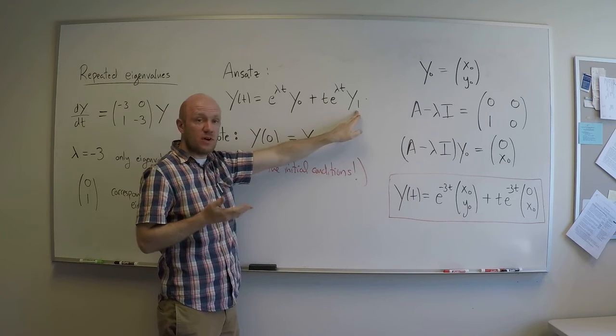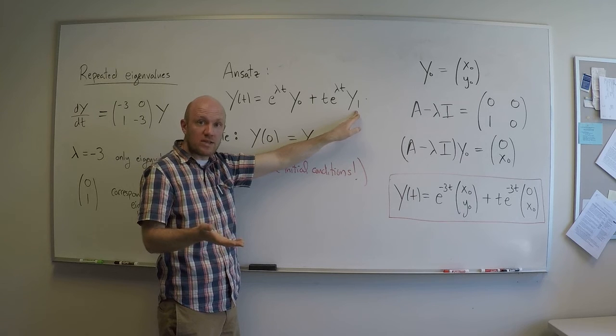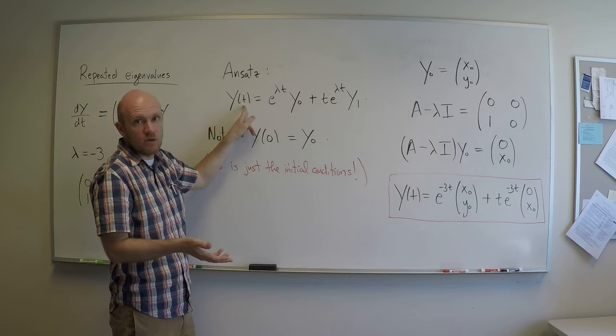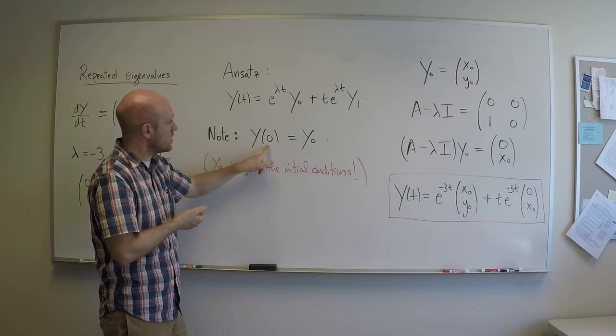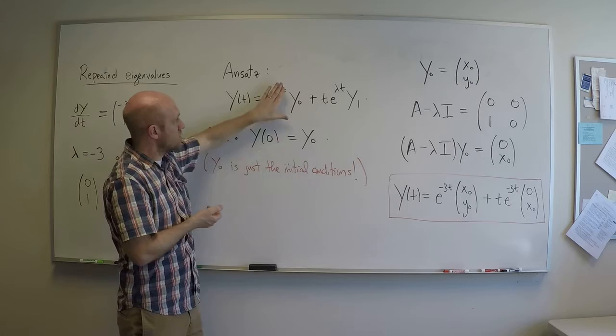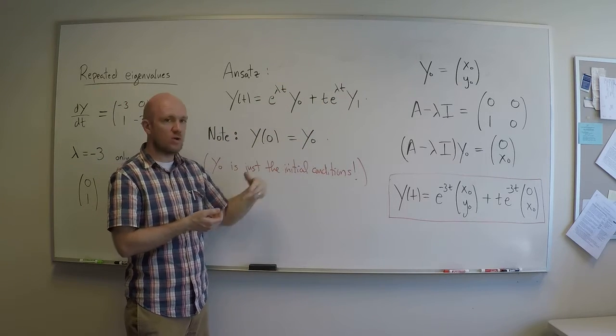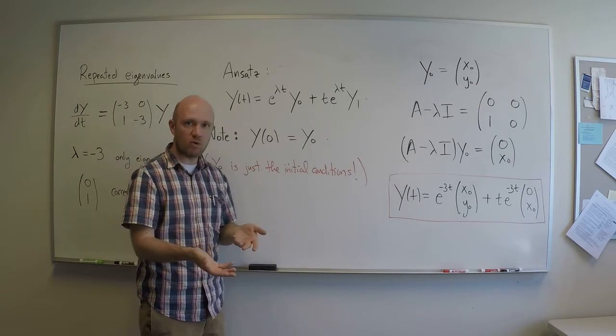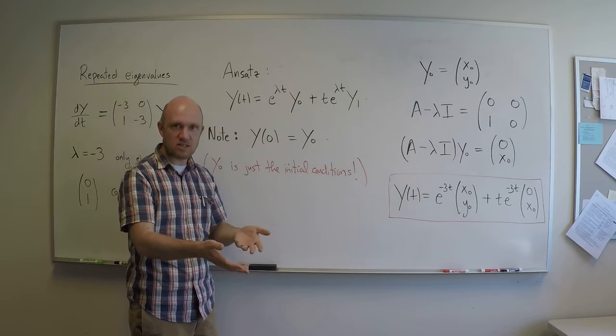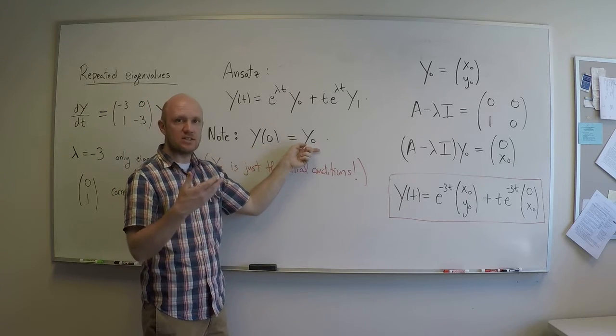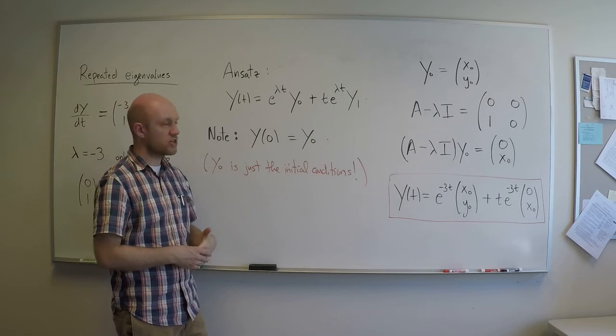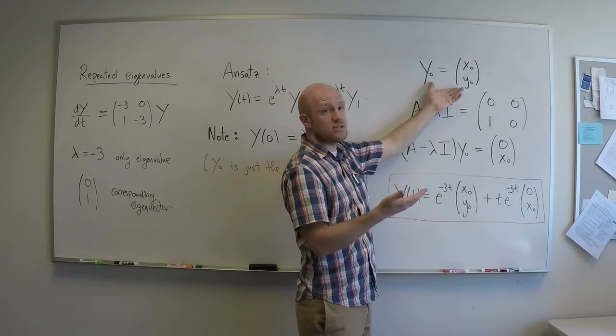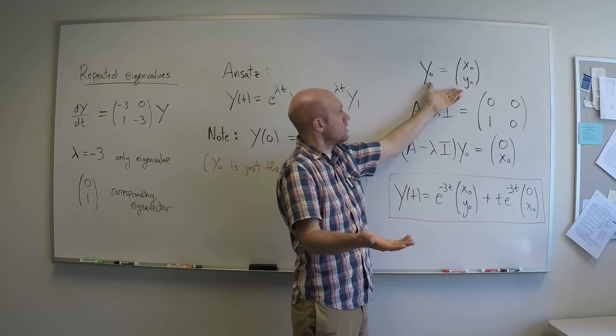Now, we figured out how to find y1 once we know what y0 is, and so the question really is what is y0? Well, if I plug in 0 into the ansatz for t, I get y(0) = y0. This is 1, this is 0. So y(0) is the initial condition. It could be chosen arbitrarily. I can say whatever y0 is, as long as I'm satisfying the initial value problem. So y(0) = y0 is the arbitrarily chosen initial condition. So in order to write down a general solution, I should just say, well, let's let y0 equal (x0, y0). There's some arbitrary initial condition.